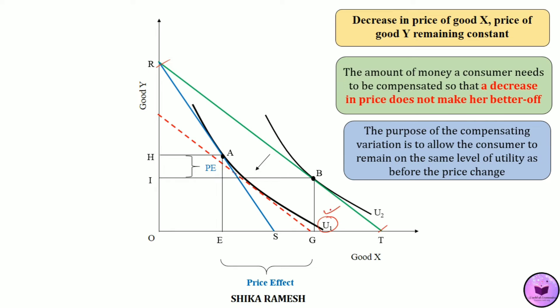In order to maintain the initial utility level, we have to adjust the increased real income downwards by drawing a budget constraint parallel to the RT budget line. That new budget line should also be tangent to the initial indifference curve U1, and that is represented by the dotted red budget line. This new red budget line is tangent to the initial indifference curve U1 at point C.